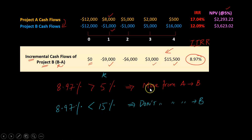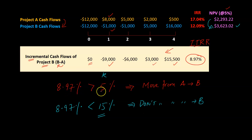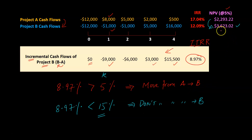This is how you interpret and use the incremental IRR to decide whether it's worthwhile to move from A to B. What is nice about the incremental IRR is that it makes things consistent with NPV. Specifically, when your discount rate was 5%, we know that the NPV of B was more than the NPV of A. And now the IIRR of 8.97% is also telling you: if you're at A, move from A to B because B is the better project — which is the same as saying B has the higher NPV.